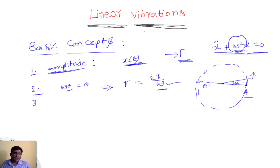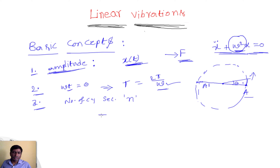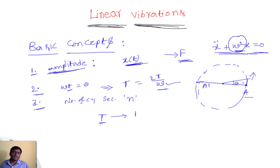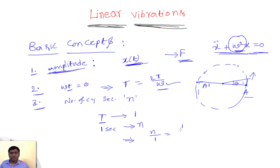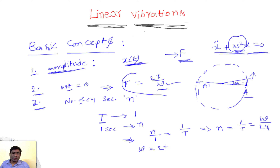The third parameter is frequency, which is the number of cycles per second, written as n or f. Within a time period T, only one cycle is completed — that is the definition of time period. So in one second, n cycles are completed. By proportionality: n divided by 1 equals 1 divided by T, so n equals 1/T. Also, omega equals 2 pi times n, or 2 pi times f, where f is in hertz.